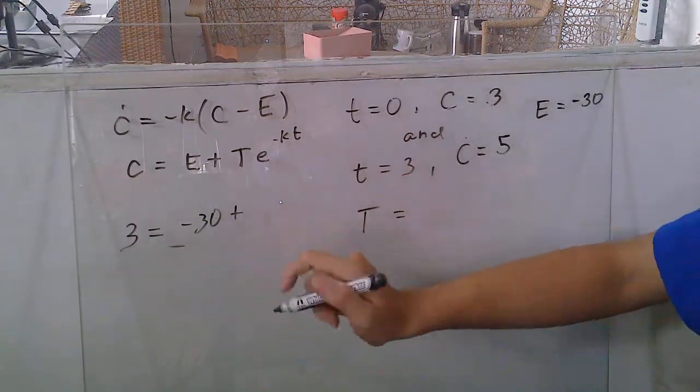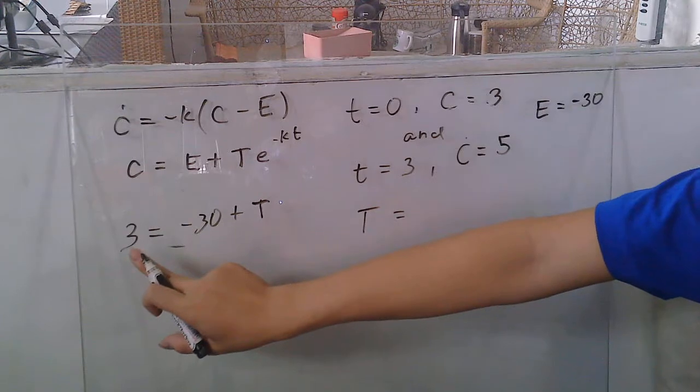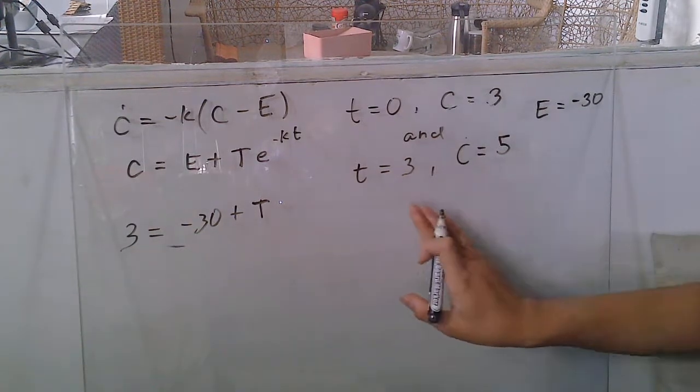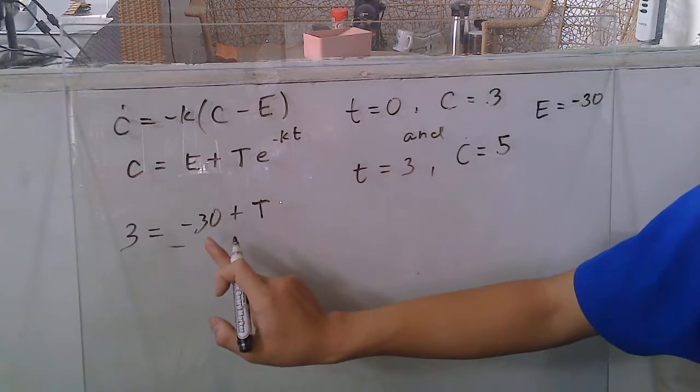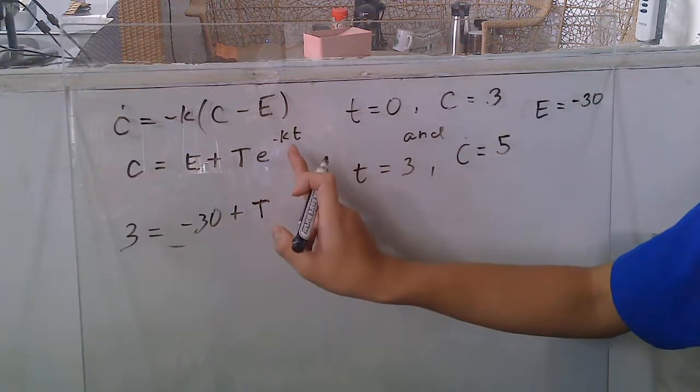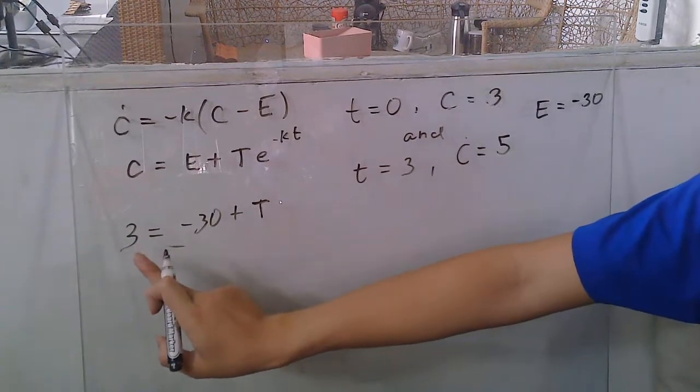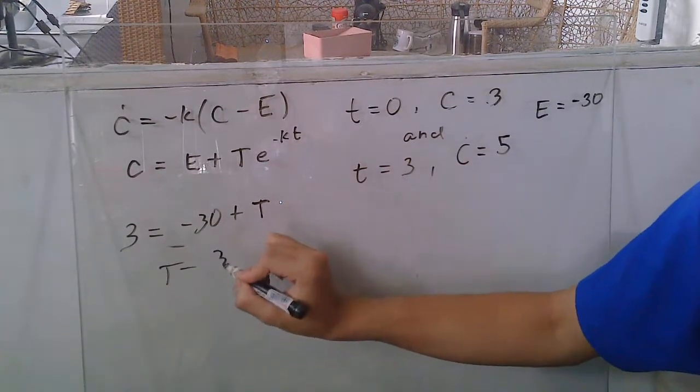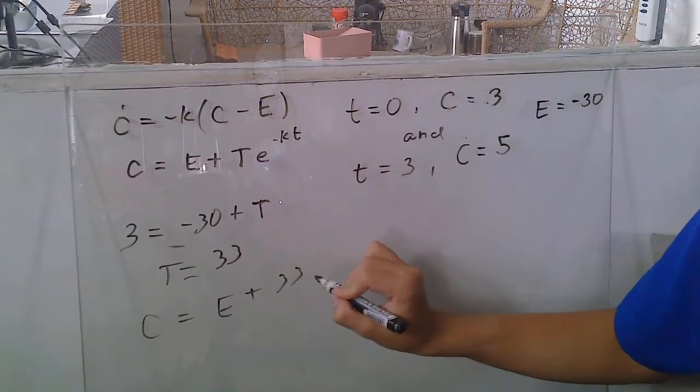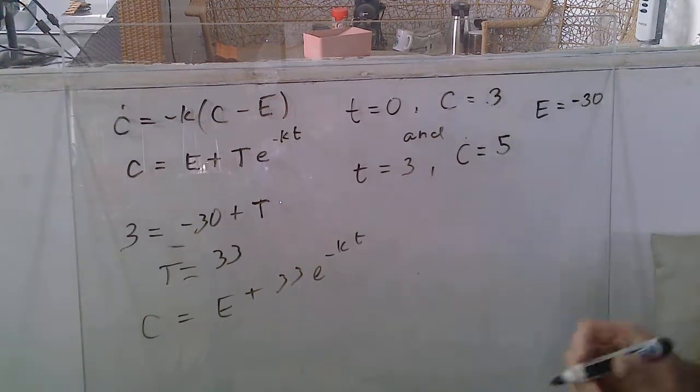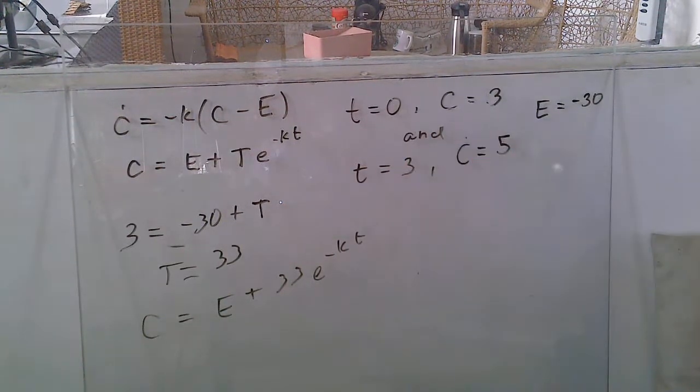So, at C equals three plus D. Let's transpose that. So, for these initial conditions, D is, since this is zero over here, it vanishes to one. So, we have D, and then this becomes 33. D equals 33. So, C is equal to E plus 33 times e to the negative Kt. And that's our general solution for this set of initial conditions.